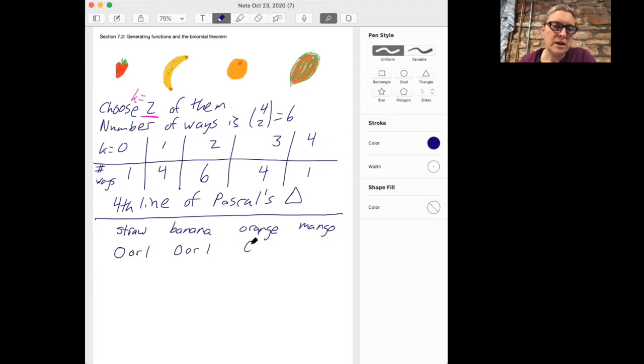So I can choose zero or one. Likewise, the banana, I can only choose zero or one. The orange, I can choose zero or one. And the mango, I can choose zero or one. And then the number of pieces of fruit I'll have will be the sum of the four values that I pick here. For instance, one way of getting two pieces of fruit would be if I picked one strawberry and one banana. So that would be the sum of one and one.